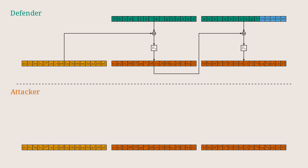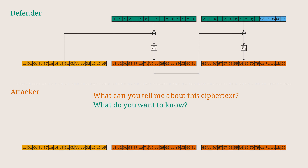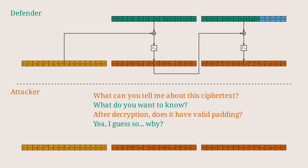Now we are the attacker. Our goal is to decrypt this message. In general it's not possible because we don't know the key — we need some kind of toehold. A very small toehold will do. For instance, what if we could get the defender to decrypt a message for us, then tell us whether the plaintext has valid padding or not? It is still quite common for systems to leak this information by accident, and a recurring theme in cryptography is that small information leaks can compound into big attacks.